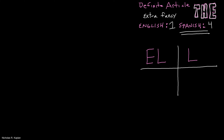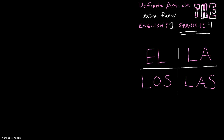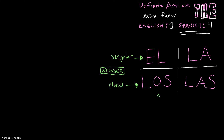El, la, los, las. Why do we need four? Because Spanish is always concerned with the number and gender of things. El and la are 'the' when you're talking about something singular, and los and las are plural — that would be called number. And then the gender: we have masculine — el and los — and feminine — la and las.